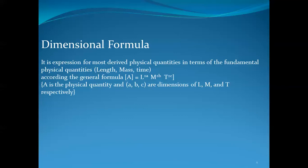During the operation of dimensional formula, you must identify whether any derived physical quantity contains length, mass, or time. The general formula is: L to the power ±a, M to the power ±b, T to the power ±c, where a, b, and c are the dimensions of L, M, and T respectively.